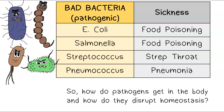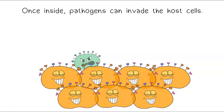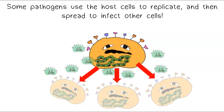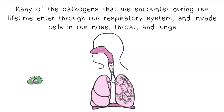So how do pathogens get into the body and how do they disrupt homeostasis? Pathogens can enter a host through the nose, mouth, eyes, through a cut, or any other opening to the body. Once inside, pathogens can invade the host cells, and some use the host cells to replicate and then spread to infect other cells. Many pathogens we encounter during our lifetime enter through our respiratory system and invade cells in our nose, throat, and lungs.